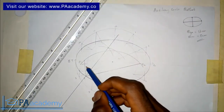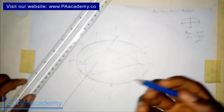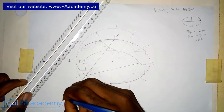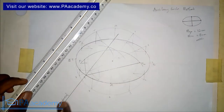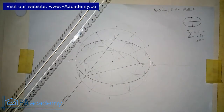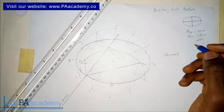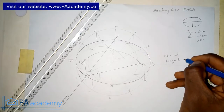From the point of intersection of those two arcs, draw a line to point Y. This line divides the angle — it bisects the angle — and this line that bisects the angle is what we call the normal. So if you are asked to draw a normal to an ellipse, this is how you go about it. We already have our normal.